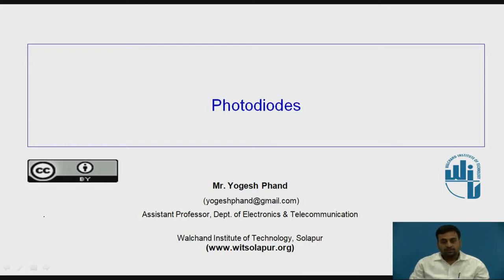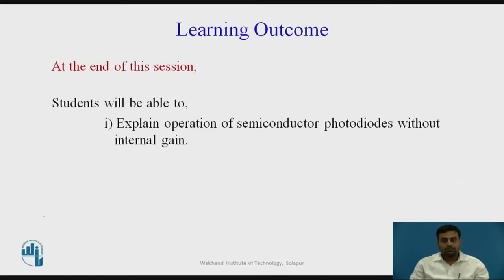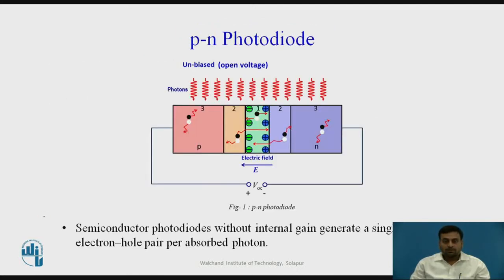Hello and welcome to a lecture on photodiodes. By the end of this session, the student will be able to explain the operation of a semiconductor photodiode without internal gains. A semiconductor photodiode without internal gain generates a single electron hole pair per absorbed photon. We are going to discuss the photodiodes without internal gains in this video.